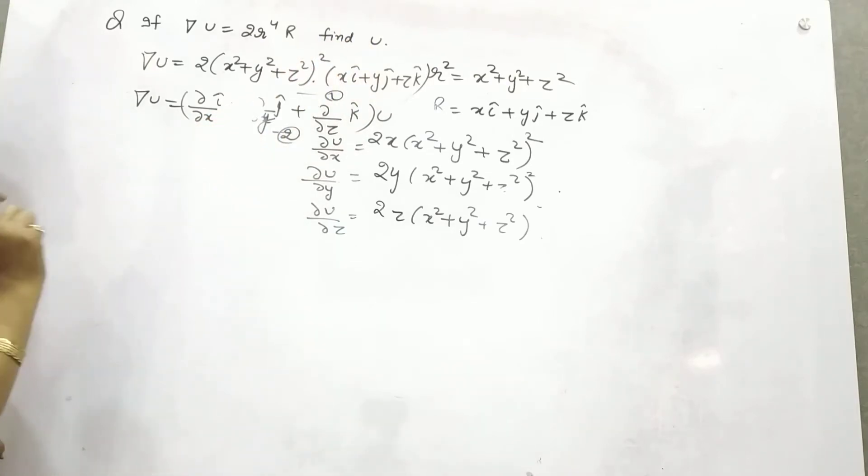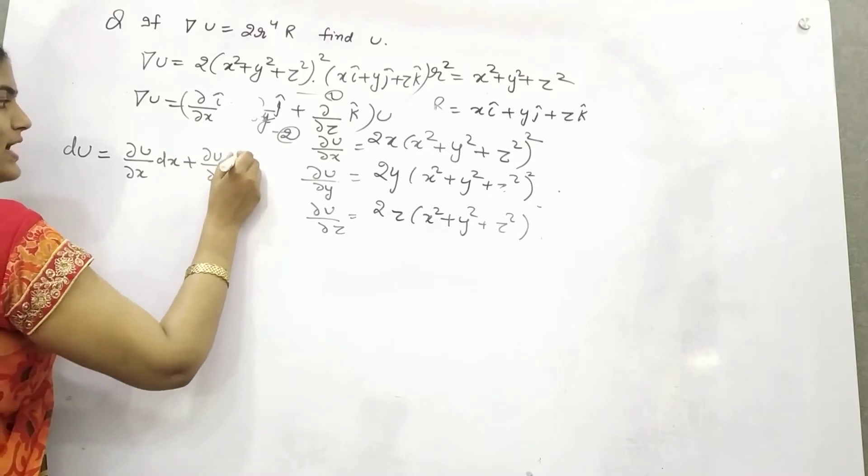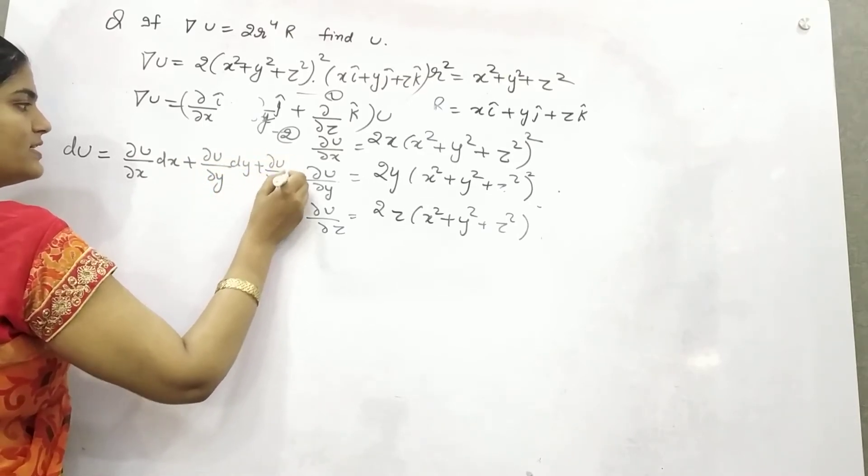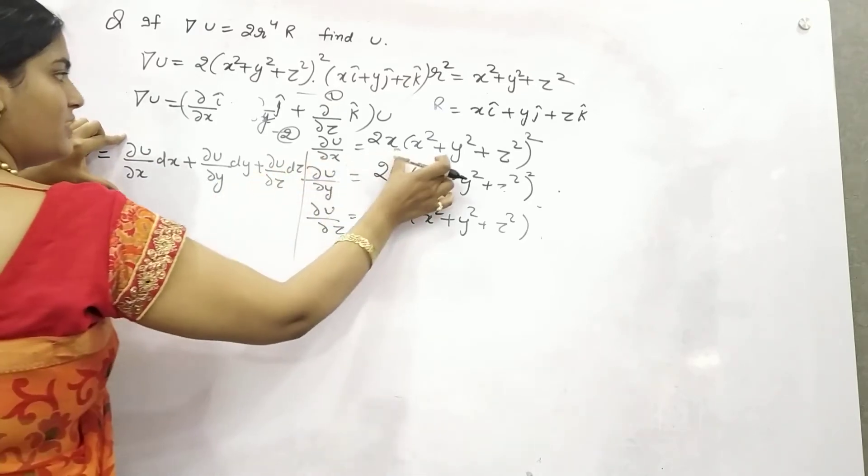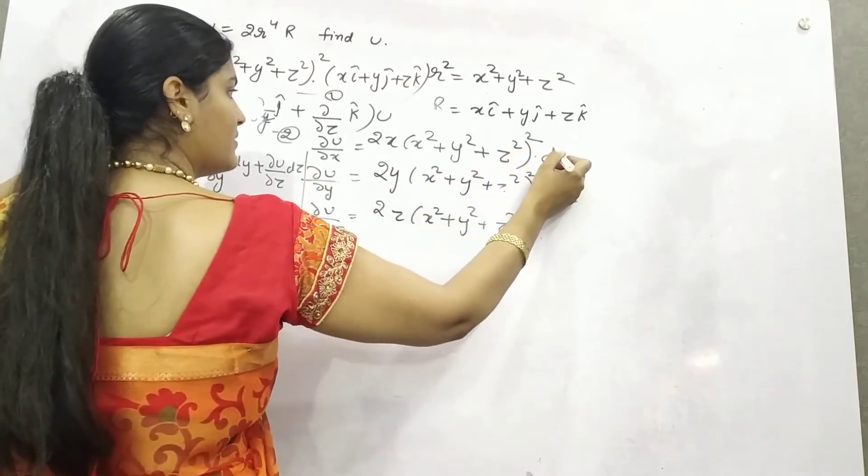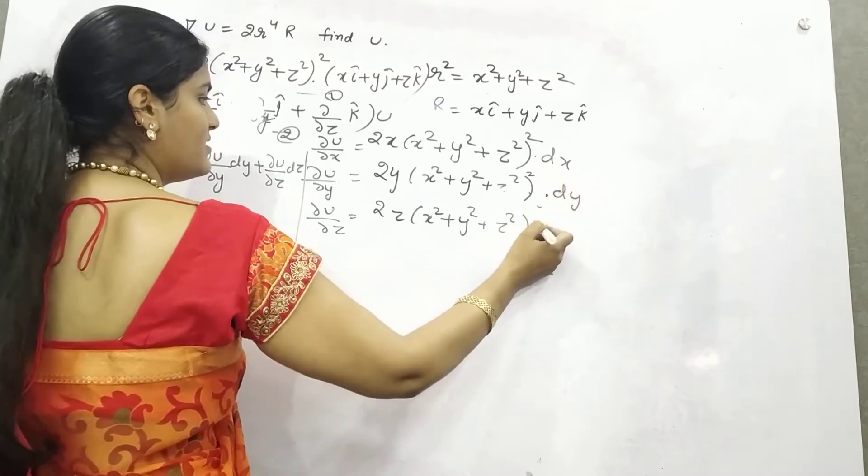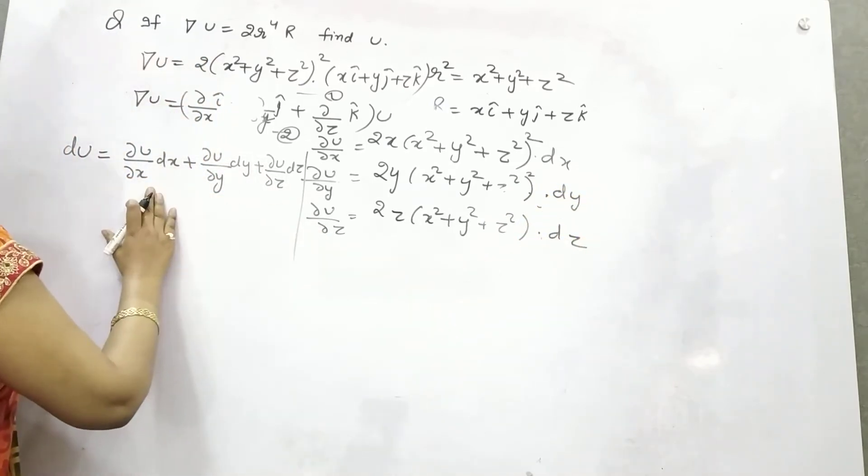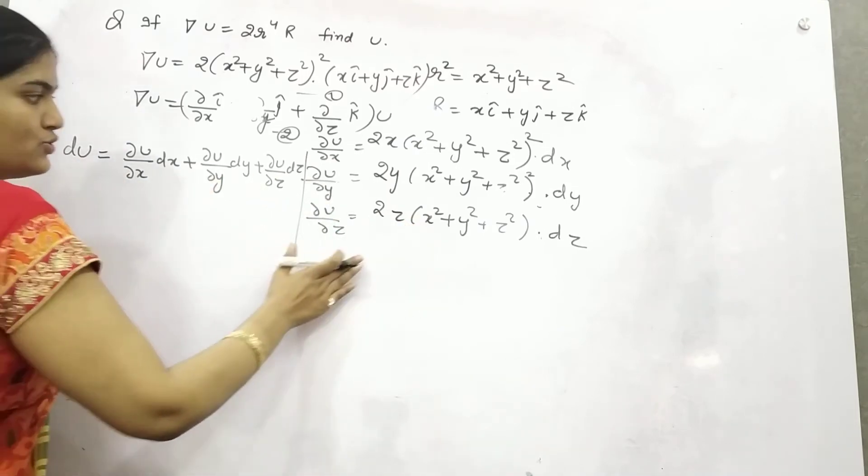Now you need to find out the full function. You know by total differentiation, du will be ∂u/∂x·dx + ∂u/∂y·dy + ∂u/∂z·dz. This is your partial differentiation with respect to x, so you need to multiply it with dx.